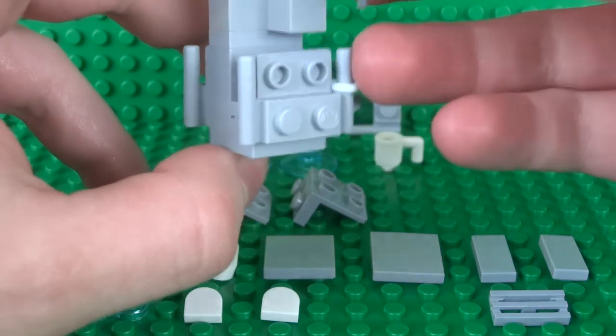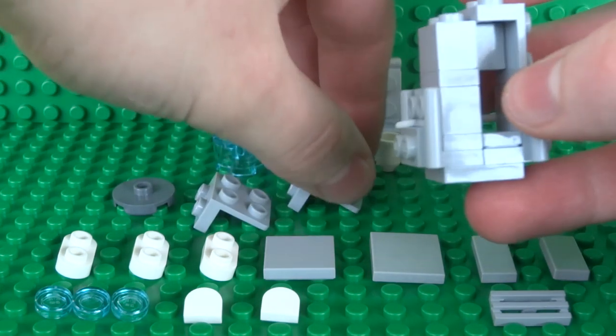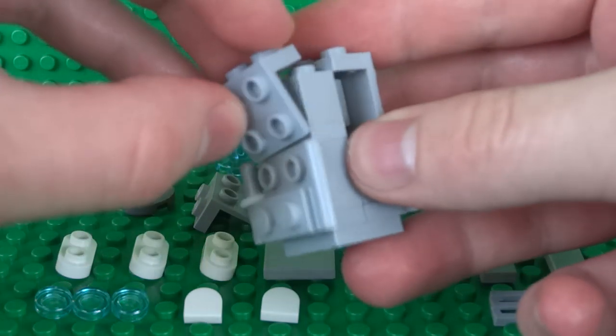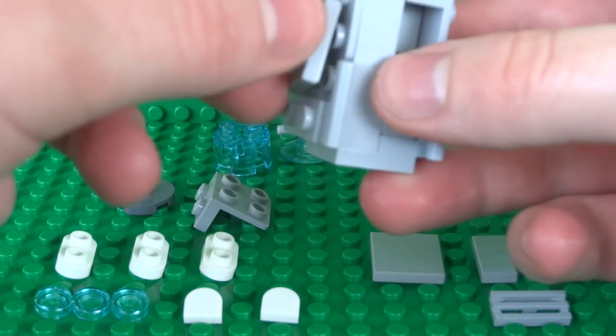Then we can fill in the gaps with two more bracket pieces, this time the ones facing downwards, and we can actually secure all these in place with some 2x2 tiles.